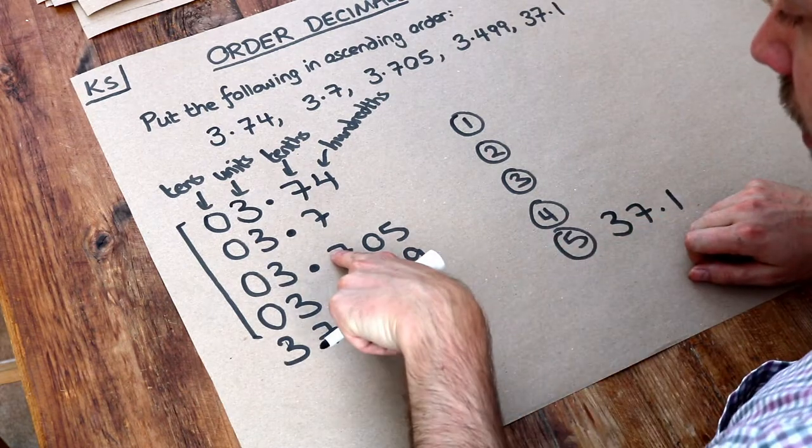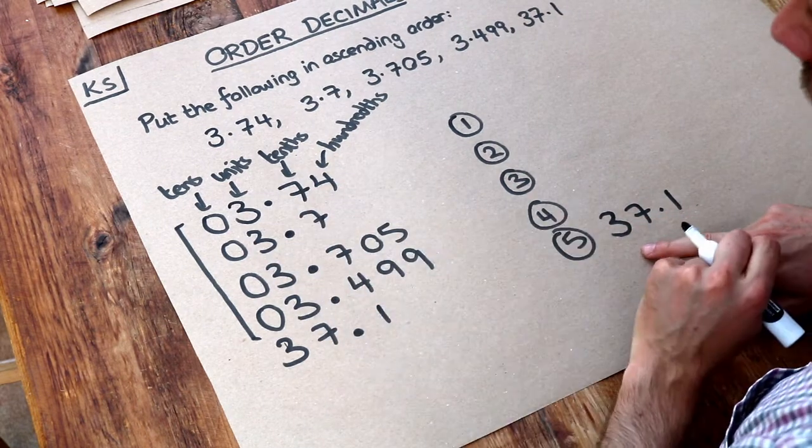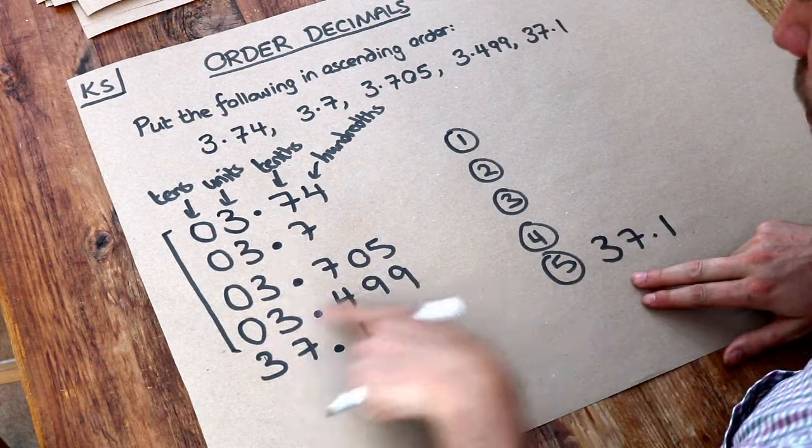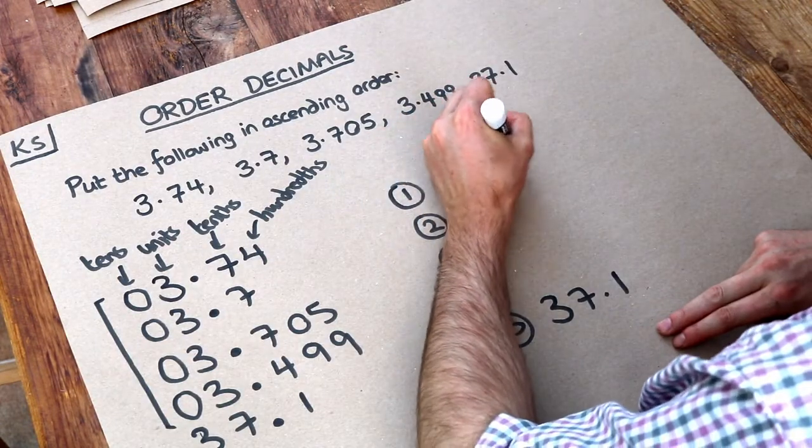So here we can see we've got four, seven, seven, seven. Four is clearly the smallest, so we're going to put that one first. So it's 3.499.